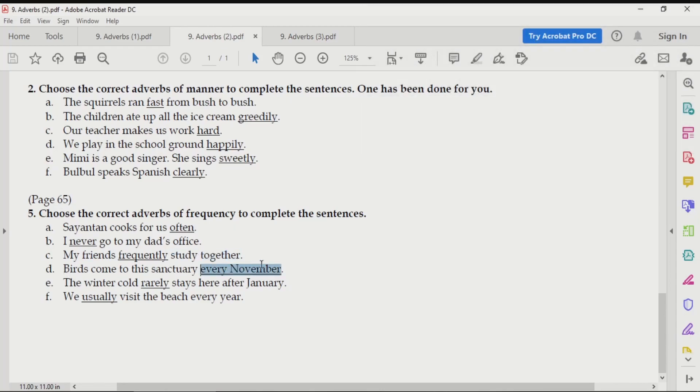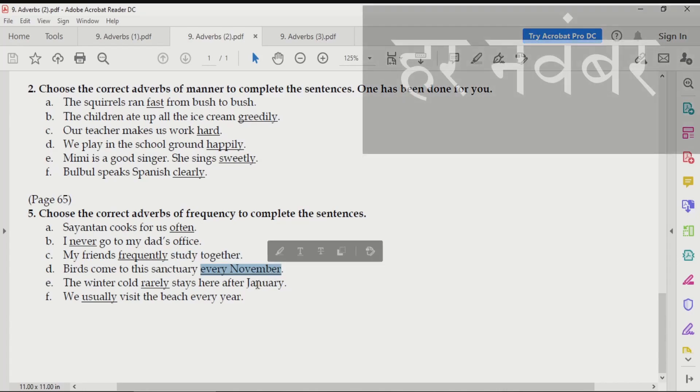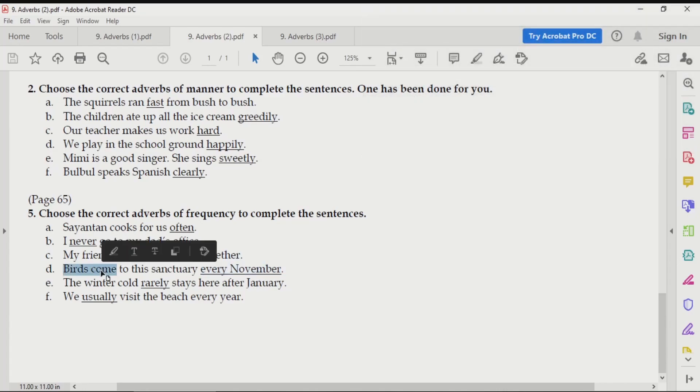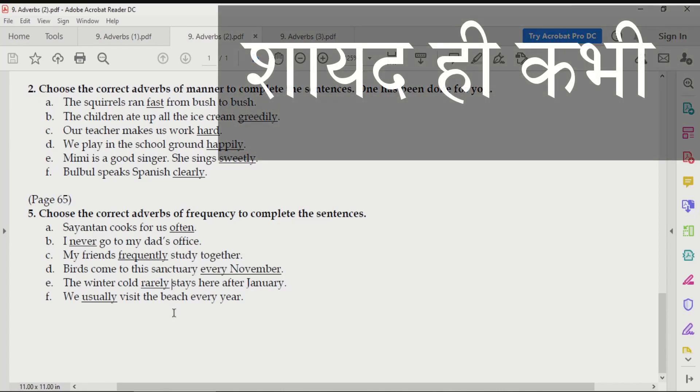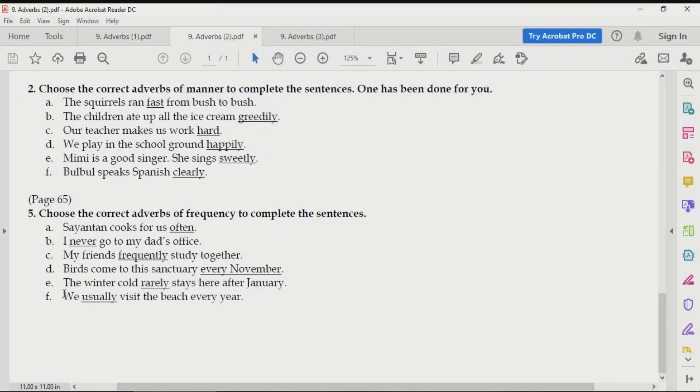Birds come to this sanctuary every November. Har november yaan par chidiya aate hai. Next one. The winter cold rarely. Now, rarely means very less. Next one. We usually visit the beach every year. That means hum aam taur pe usually. That means maybe some years these people do not visit the beach. But mostly they visit. So, it will be usually, which is an adverb of frequency.